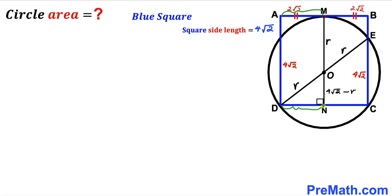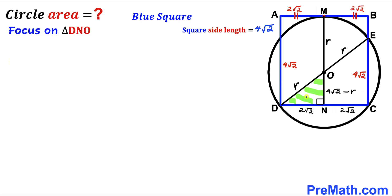Furthermore, we observe that AM equals DN. Since AM = 2√2, we have DN = 2√2 as well. Now let's focus on right triangle DNO and apply the Pythagorean theorem.